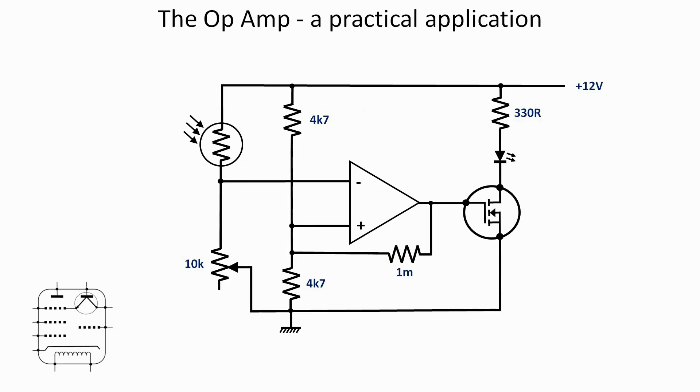Instead of a potentiometer on the inverting input, we've now got a light-dependent resistor at the top and a 10k potentiometer at the bottom, which will allow me to control the sensitivity—how the voltage between those two components responds to the variation in light level.